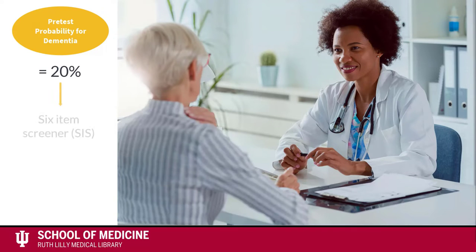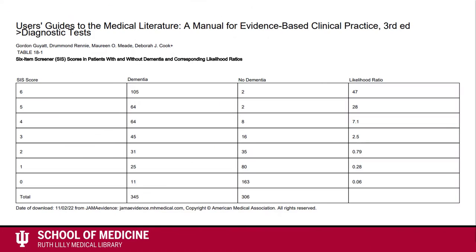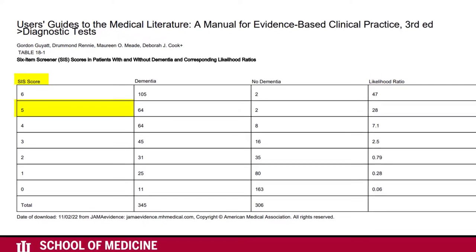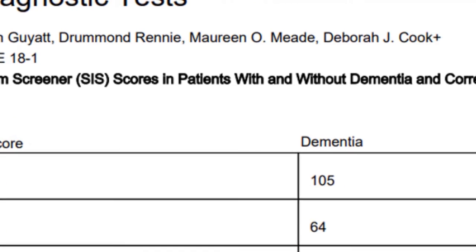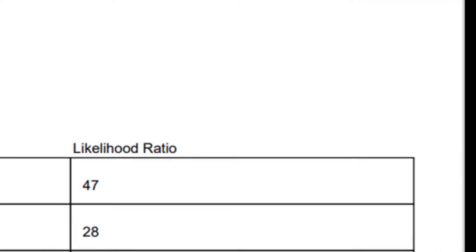Here's an example. Let's say you have decided a patient's pre-test probability for dementia is pretty low, around 20%. You then administer the six-item screener. The patient makes five errors. You then consult the corresponding likelihood ratios of the six-item screener scores and see that five errors corresponds with a likelihood ratio of 28.